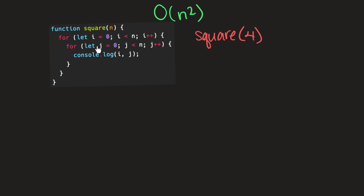For the first iteration, i equals zero, and we move into the nested for loop. i and j are both zero, so we draw a square. Then j becomes one — draw a square. j becomes two — draw a square. j becomes three — draw a square. Now j is four, which equals n, so j is no longer less than n and we stop iterating through this nested for loop.